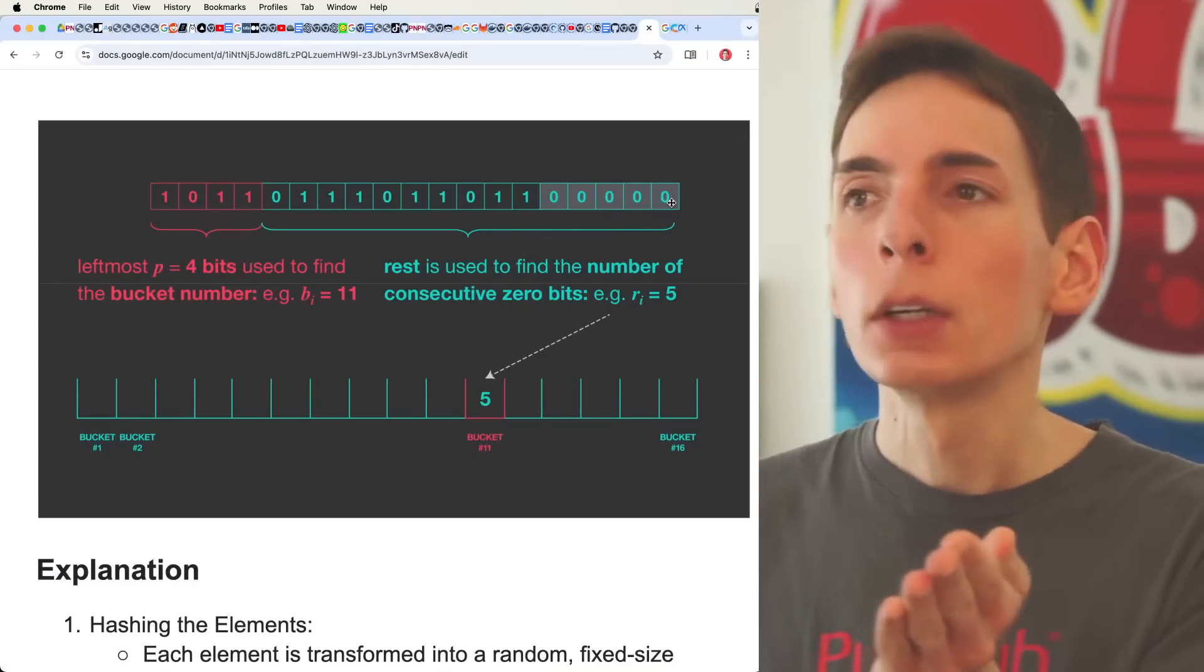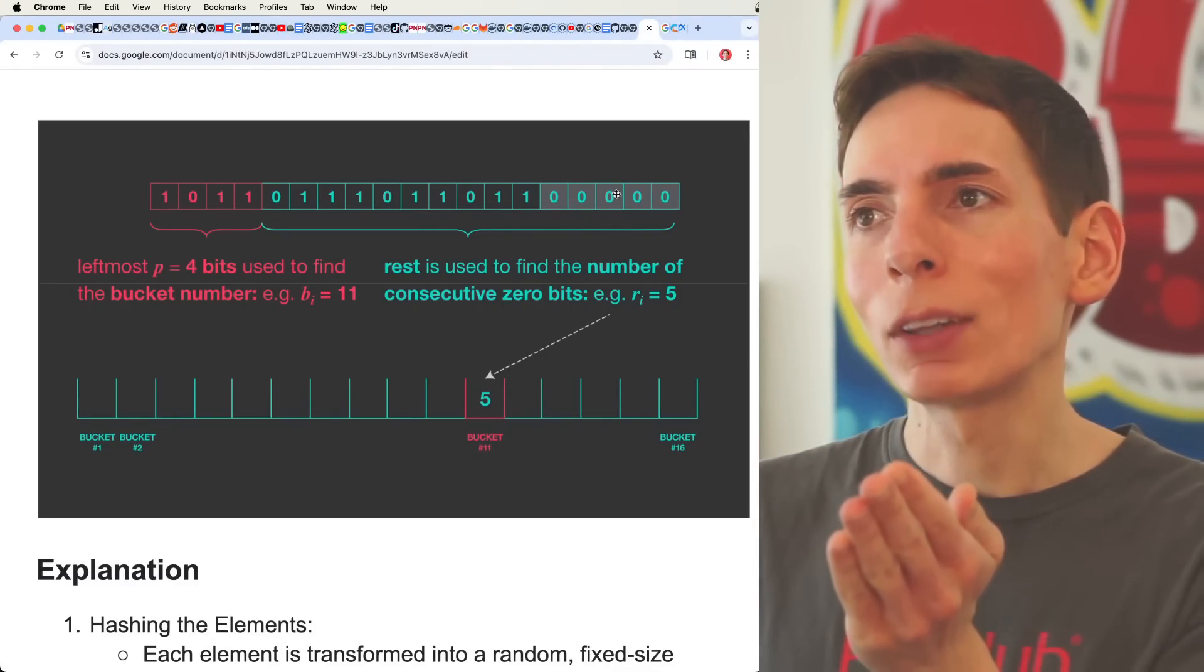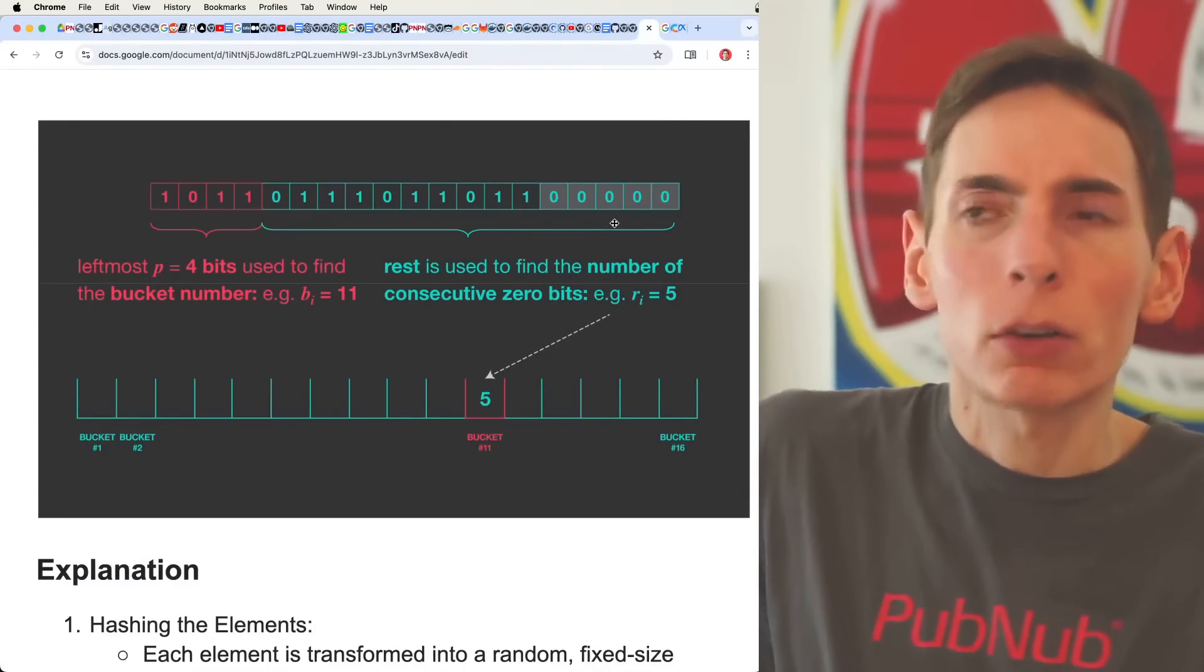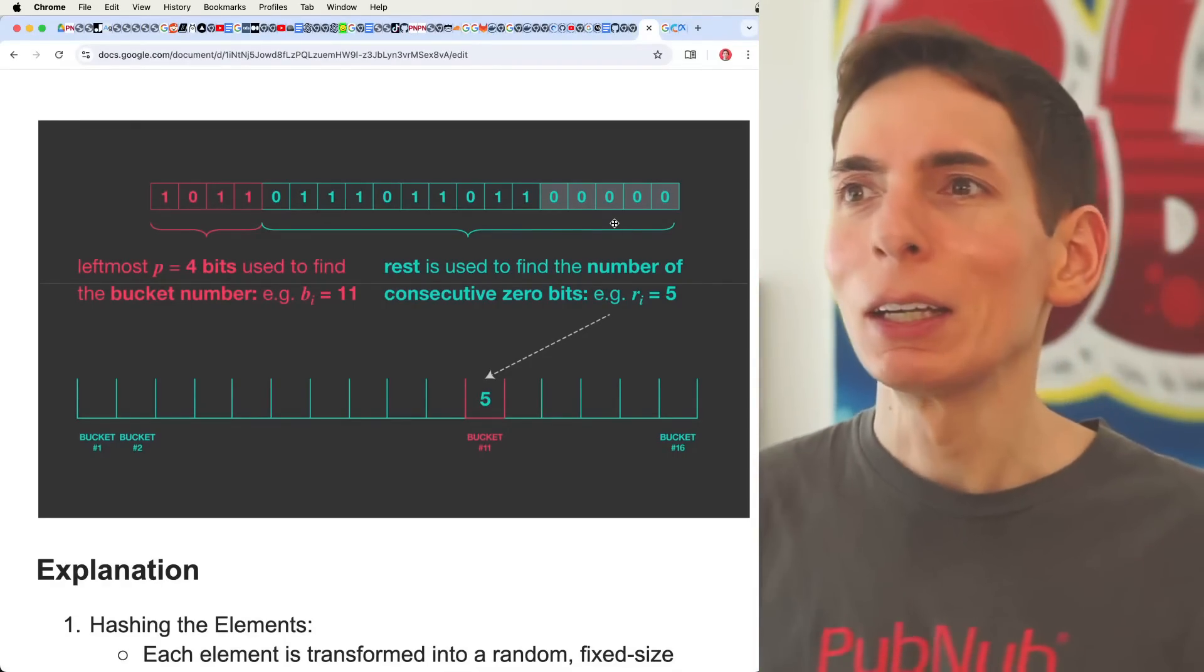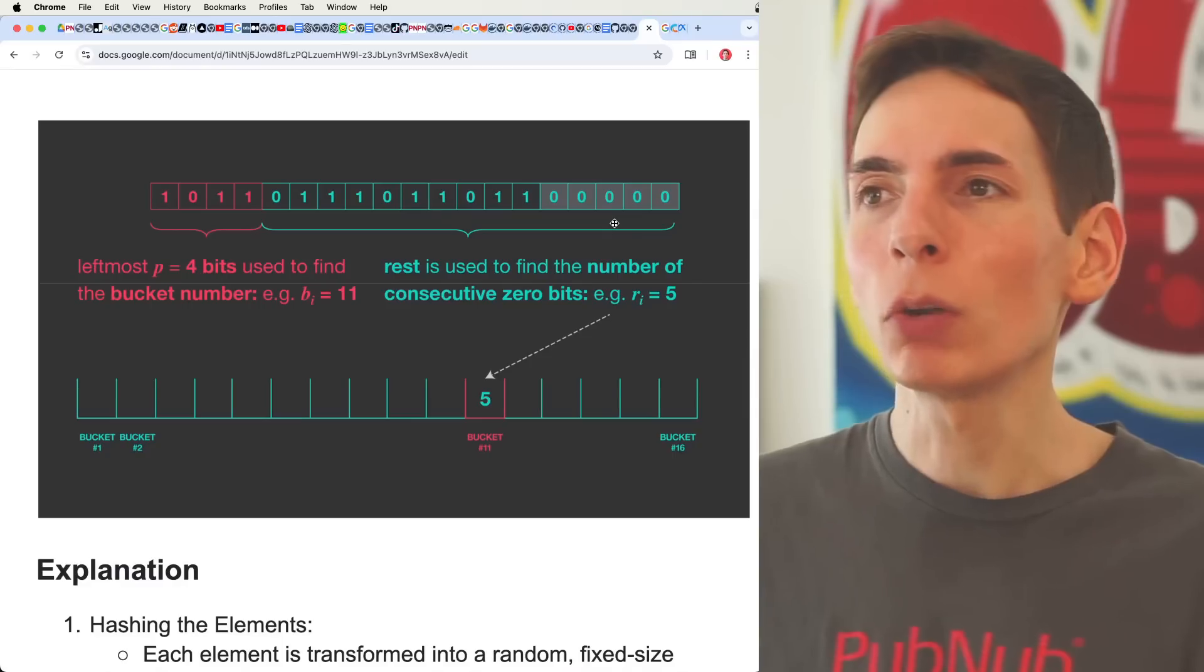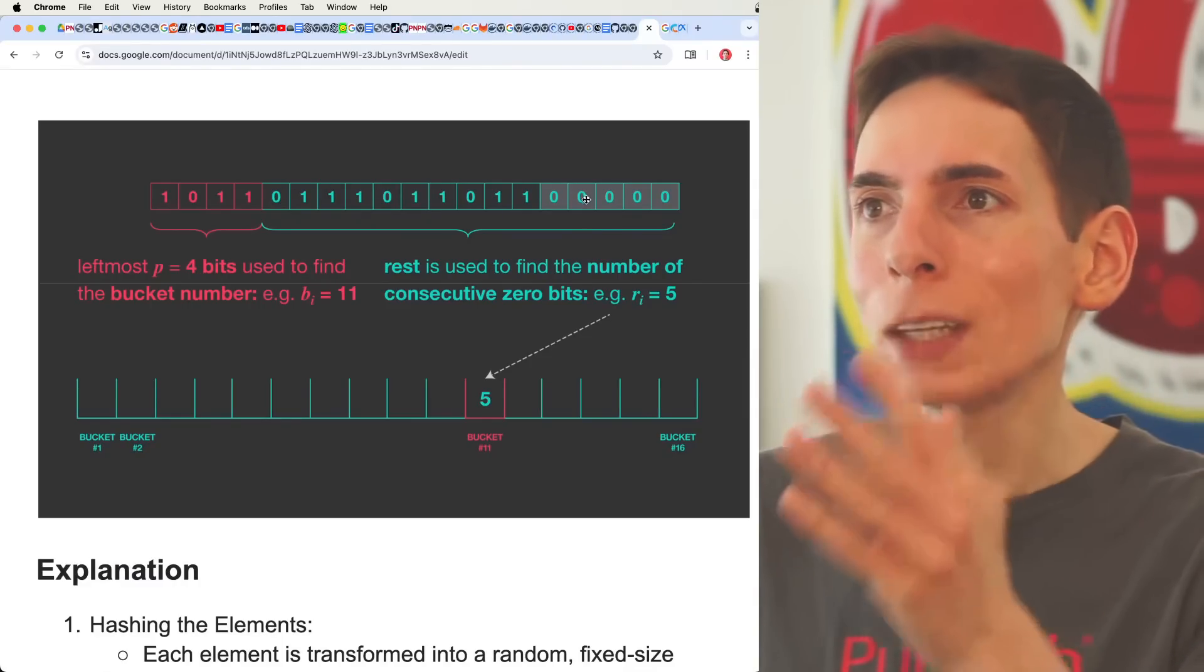Or you can do it at the tail and you can count the number of zeros that you have at the end. That works too. It doesn't really matter. You can do it from any of the directions because these numbers are... It doesn't matter. You can implement it however you want from that perspective, beginning or the end.